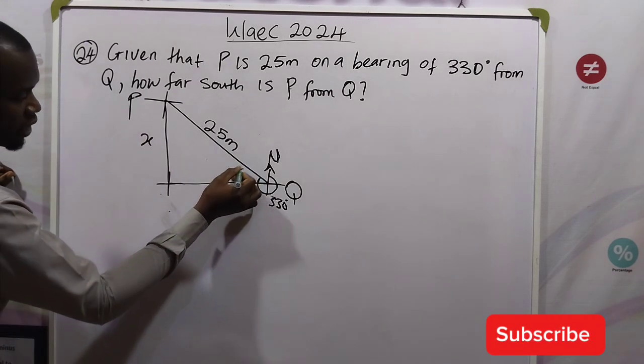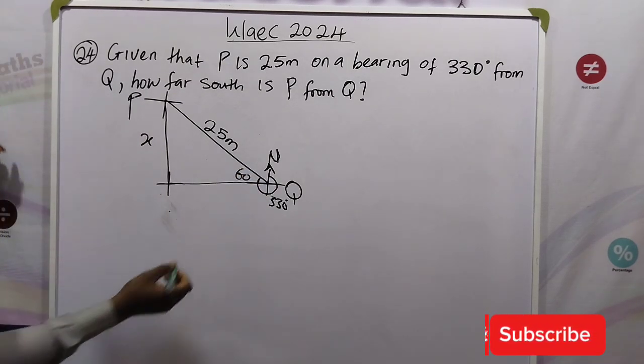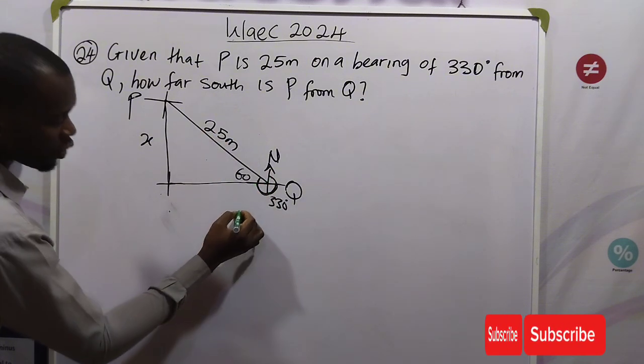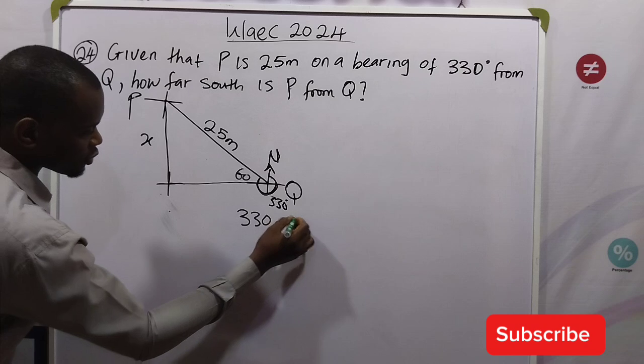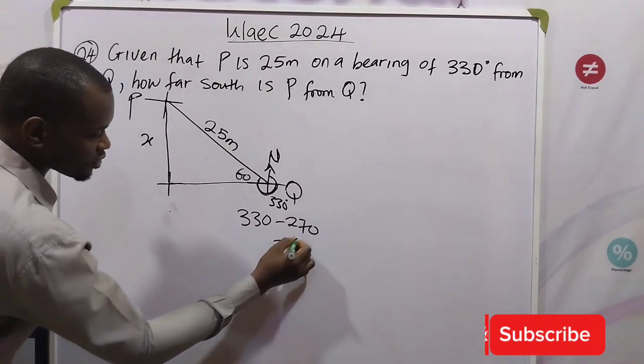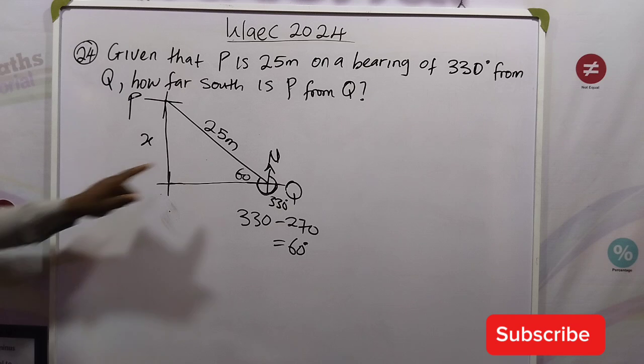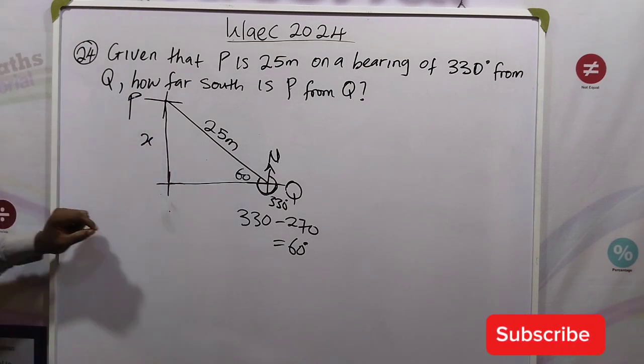Take note that the angle here will have to be 60. The reason is because from here to here is 270. So we are going to say 330 minus 270, that will give you 60 degrees, the angle in the triangle. So with this now, we can find this length.